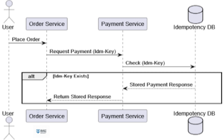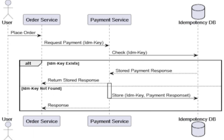The order service will attach a unique idempotency key to the request — usually a UUID or GUID. If the idempotency key exists in the idempotency database, it means this specific request was already processed, and the previous response will be returned. Otherwise, the payment service will process the request and store the response in the idempotency database under the provided key.